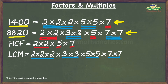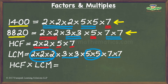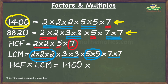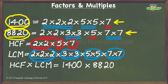If I now multiply the HCF and LCM, the product of the 2's, the 5's, and the 7's will give me 8820. Hence I have shown that the product of the HCF and LCM of the numbers I took up equals the product of the numbers.